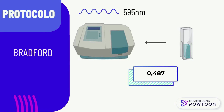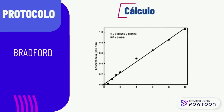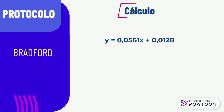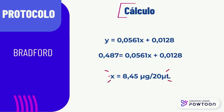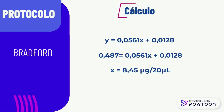A leitura do Bradford, para este caso, deu 0,487. O cálculo do Bradford é muito semelhante ao do Lowry. Também utilizamos uma curva padrão estabelecida previamente, e a partir daí usamos a equação da reta para calcular. Substituímos o valor de Y pela absorbância e encontramos o valor de X. O valor calculado corresponde à quantidade de proteínas totais em microgramas do volume de amostra utilizado no experimento. Aqui utilizamos 20 microlitros da amostra, e neste caso a quantificação é 8,45 microgramas por 20 microlitros.